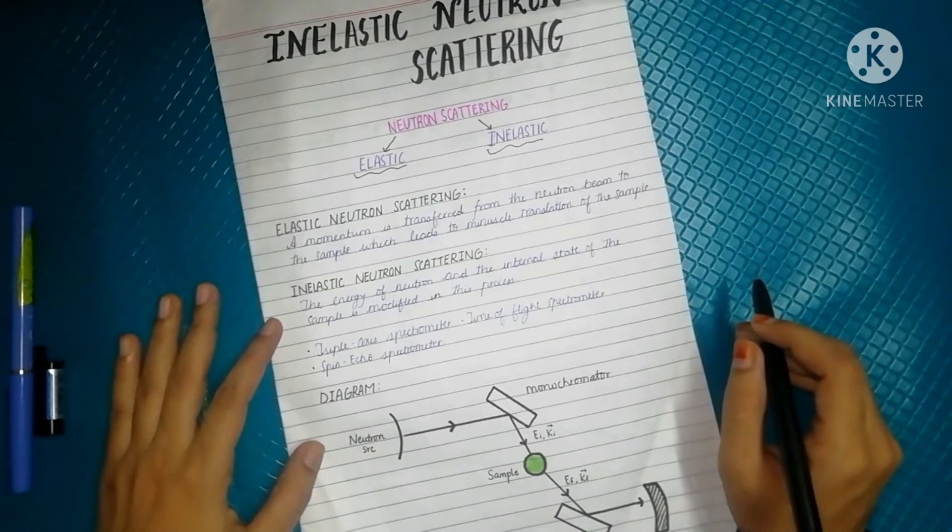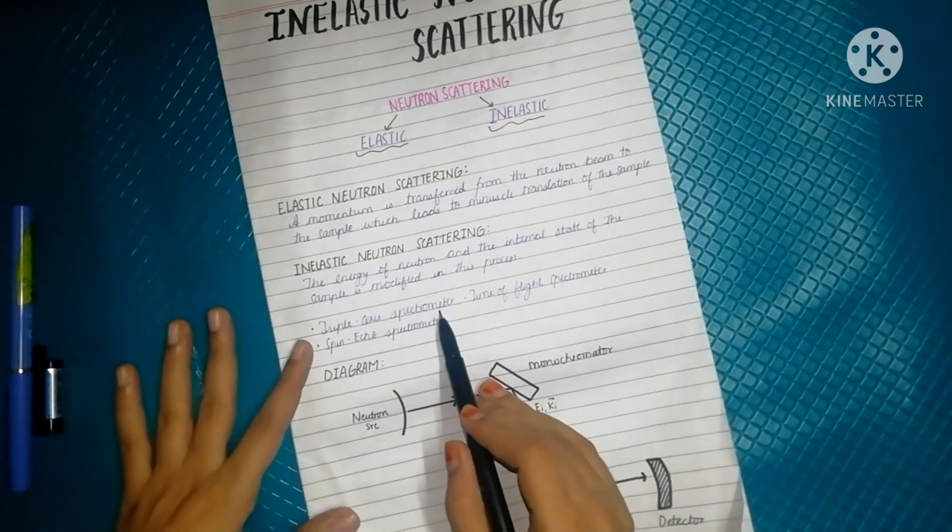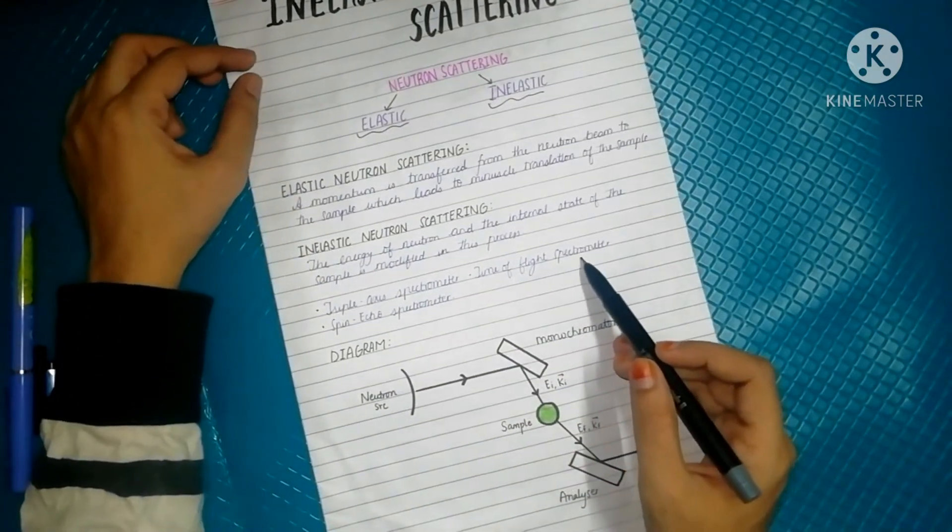The three methods that can be used are: first, triple axis spectrometer; time-of-flight spectrometer; and spin echo spectrometer.